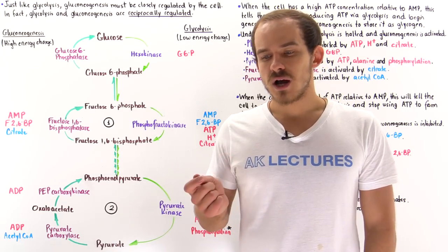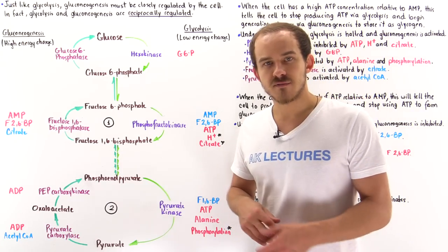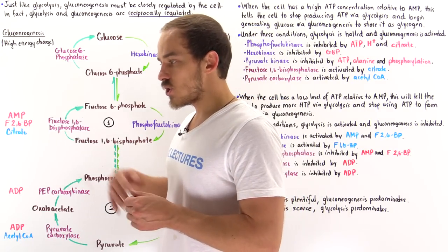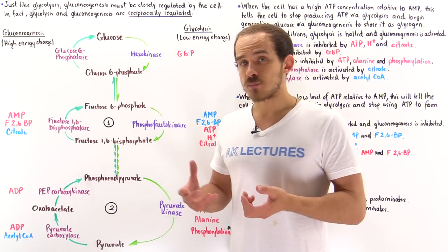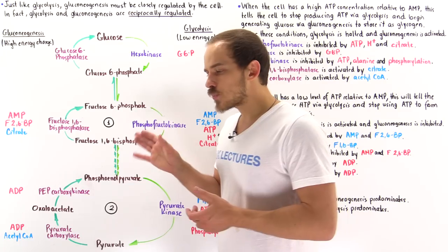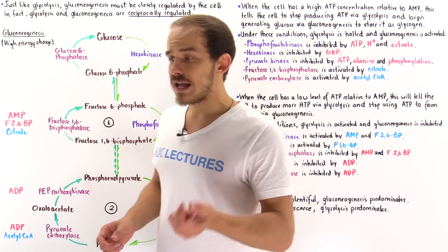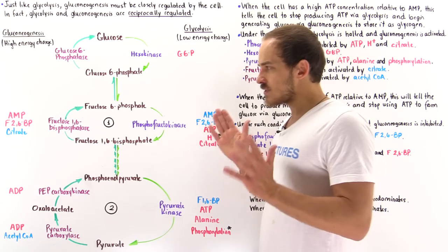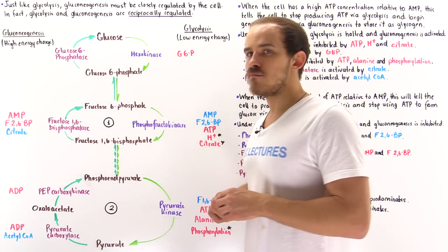Just like glycolysis, the process of gluconeogenesis must be closely regulated by the cells of our body. What's even more interesting is that these two processes — glycolysis and gluconeogenesis — are actually regulated in a reciprocal fashion. What that means is, when one of these processes takes place in the cell, the other process is essentially turned off. The question is why — why can't these two processes take place at the same exact moment in time?